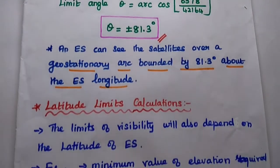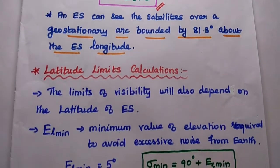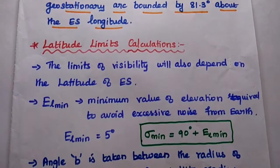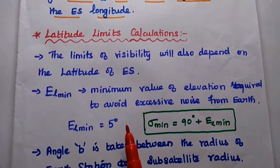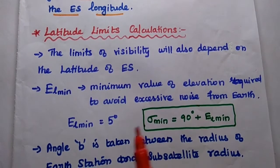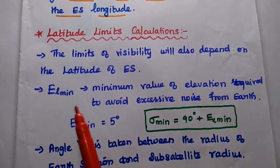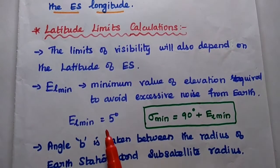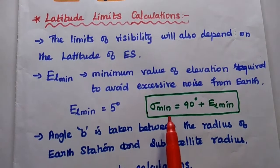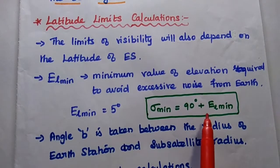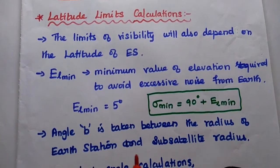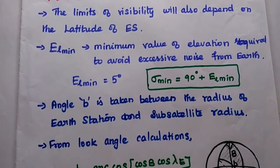Next is the latitude limits calculation. The limits of visibility also depend on the latitude of the earth station. As discussed earlier, the elevation angle should be a minimum finite value to avoid excessive noise from the earth — this is represented as EL minimum. Its typical value is 5 degrees. Here we can express the elevation angle as sigma_min equal to 90 degrees plus EL_min, where EL_min is the minimum requirement for elevation.